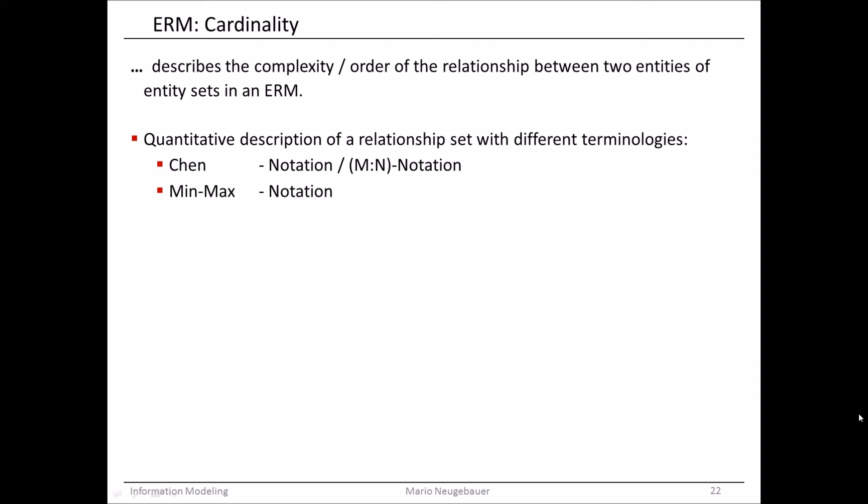Another thing we have to talk about in our entity relationship model is cardinality. Cardinality deals with numbers of entities which can somehow be connected — not only entity sets but also entities. In our examples before, we saw that professors can be somehow related to students, and now with cardinalities we would like to fix in our entity relationship model how many professors can be related to how many students and vice versa. The cardinality describes the quantity of a relationship set — the quantity of entities which are related to each other.